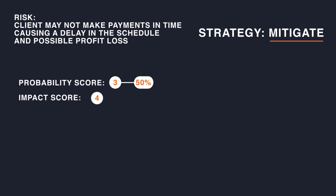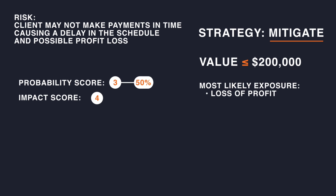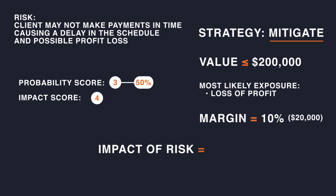Now we need to assign a monetary value to the impact. If the entire construction project is estimated at $200,000, we know the monetary value of this risk occurring won't be more than $200,000. Since we mitigated the impact of this risk by providing a payment schedule in the contract, and that payments would be made as major deliverables are provided, our most likely monetary exposure is a loss of profit. If our profit margin on this project is 10%, or $20,000, it would be reasonable to estimate the monetary value of this risk occurring would be no greater than a negative $20,000, or a loss of $20,000.